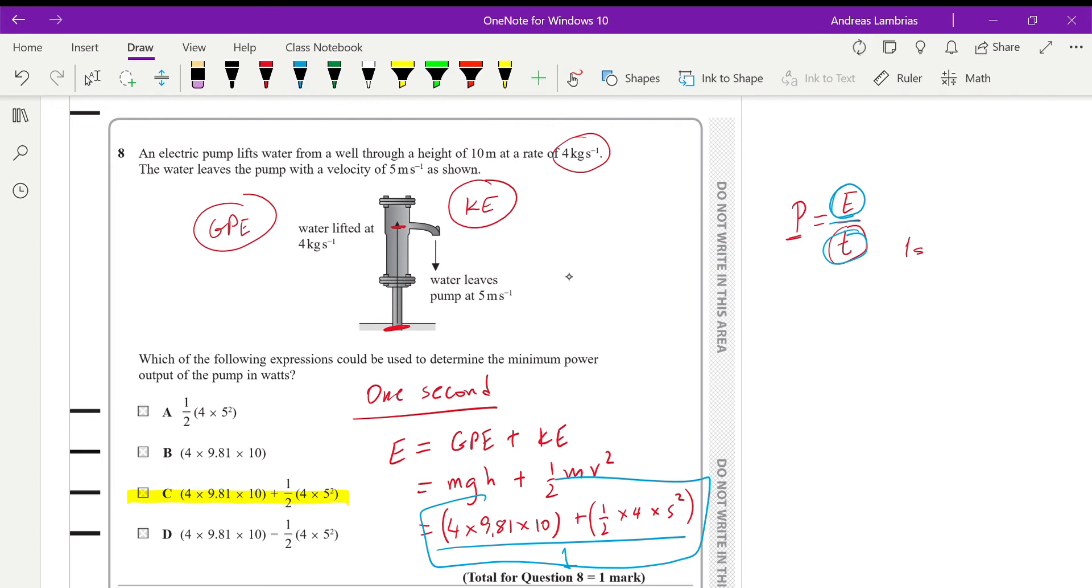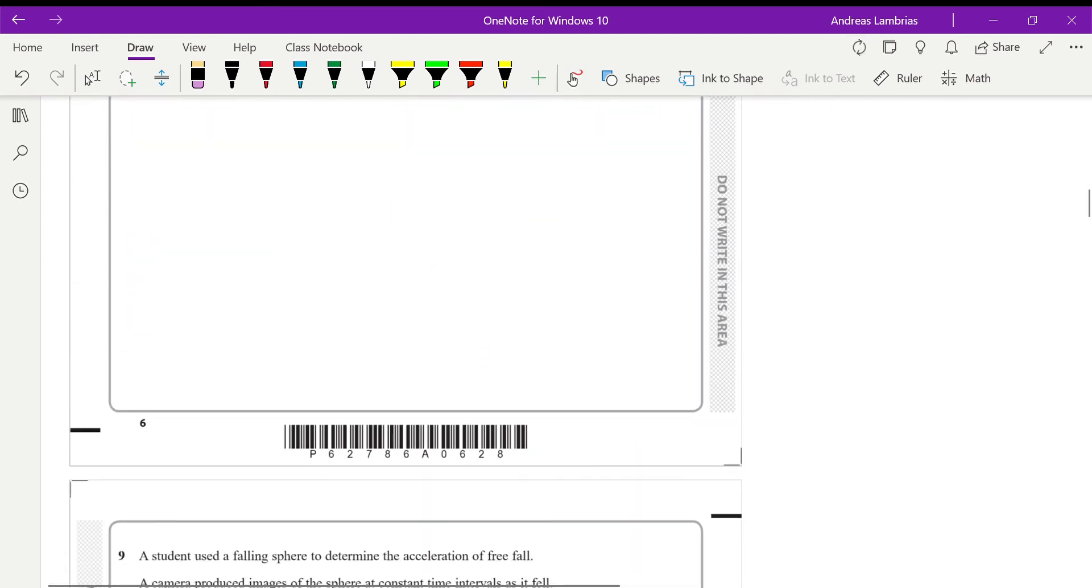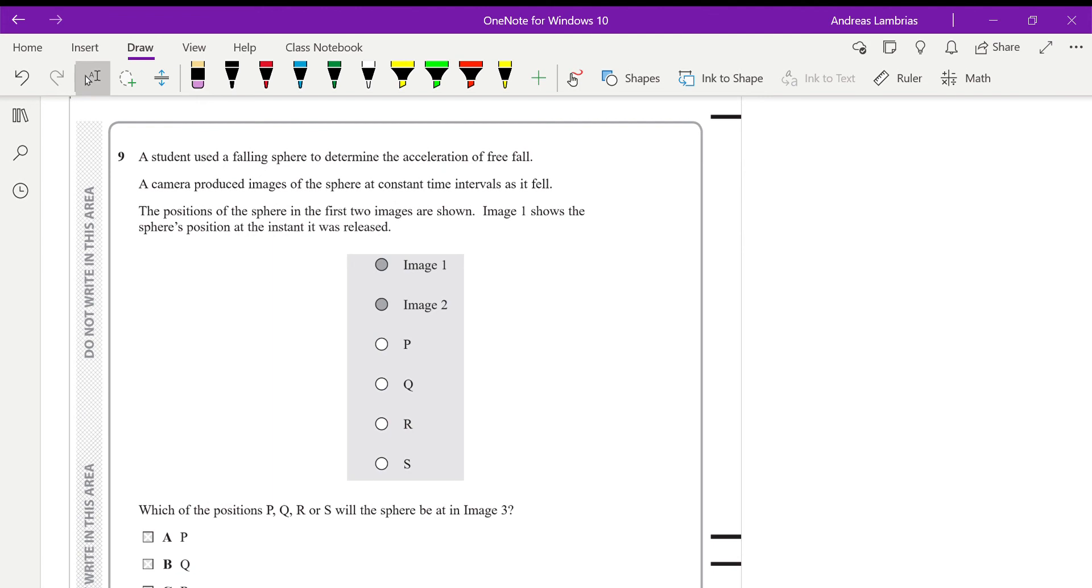The falling sphere is used to determine the acceleration of free fall. The camera produced images of the sphere at constant time intervals as it fell. So the camera is taking photos at constant time intervals. So the time difference between each image is the same unit of time. And this image shows the possible positions of the sphere in the first two images. And we've been asked to find out the position of image three. Now, this is a free fall. And in free fall, we know that it's an accelerating motion.